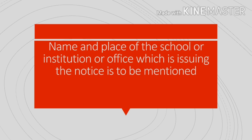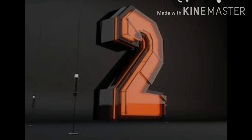Notice writing karte huay sabse pehli baat jo hum top par likhte hain: jis bhi specific group of people ya students tak hum ne jo bhi suchna pahunchani hai, us suchna ko issue kisne kiya hai — issuing authority kaun hai, school ka naam kya hai, ya koi agency hai, ya phir koi society hai. Us institution ka issuing authority ka naam number one pe rahega, aur issuing authority ke baad comma lekar hum uska place specify karte hain. Jaise Rohe Model School, comma, Jallopur.